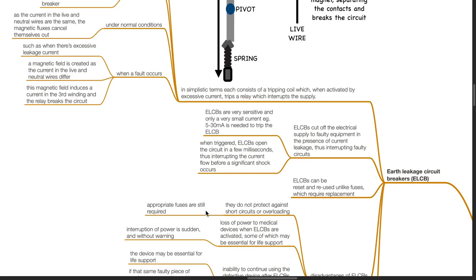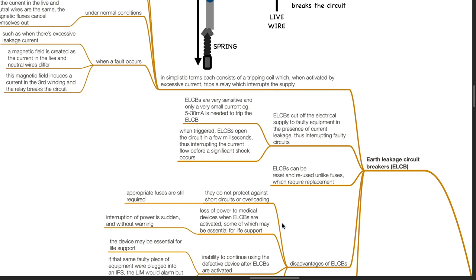ELCBs cut off the electrical supply to faulty equipment in the presence of current leakage, thus interrupting faulty circuits. ELCBs are very sensitive and only a very small current, 5 to 30 milliamps, is needed to trip the ELCB. When triggered, ELCBs open the circuit in a few milliseconds, thus interrupting the current flow before a significant shock occurs. ELCBs can be reset and reused unlike fuses which require replacement.